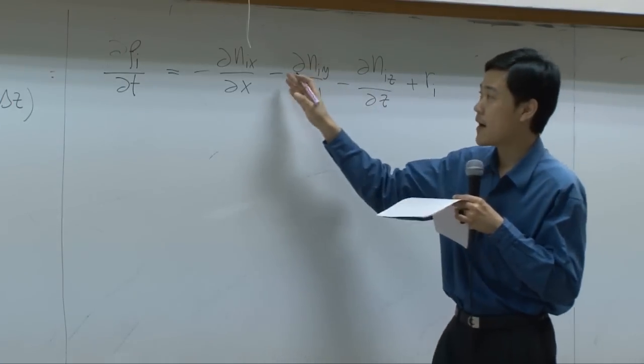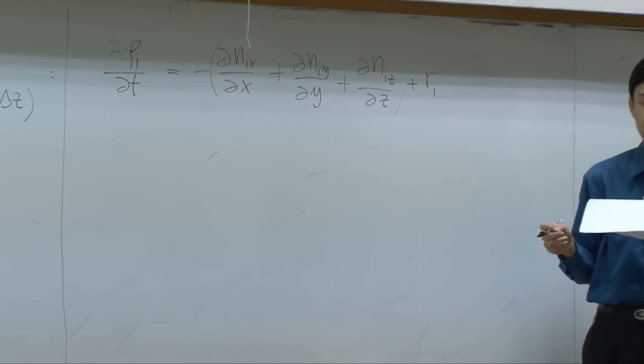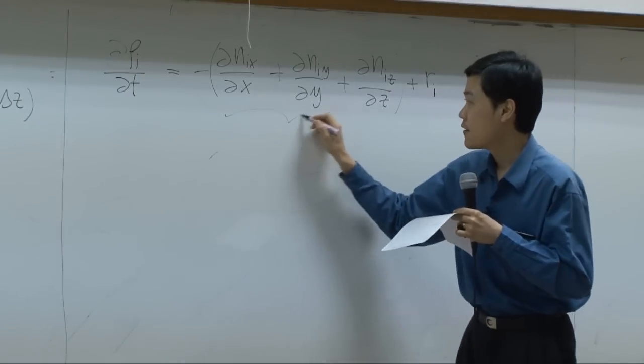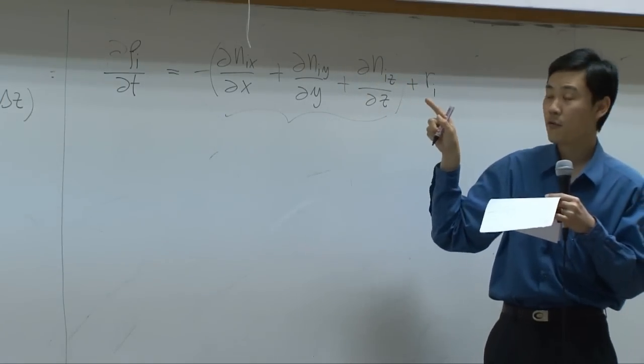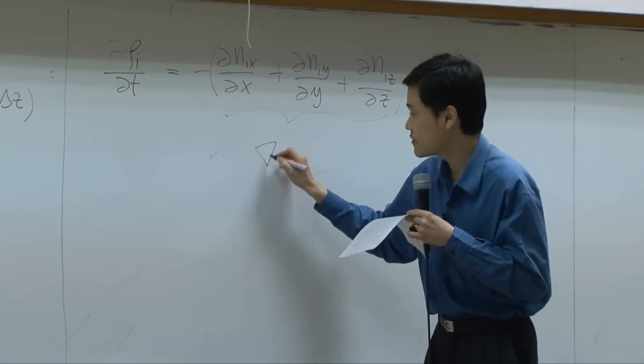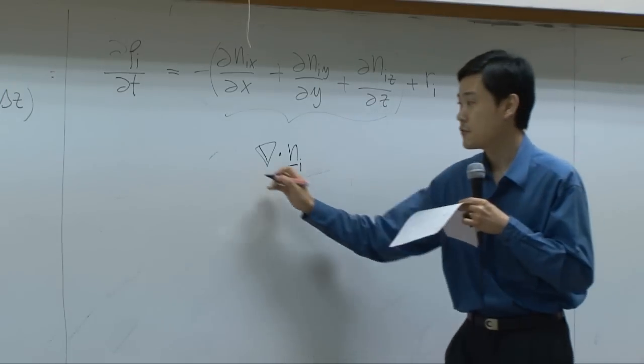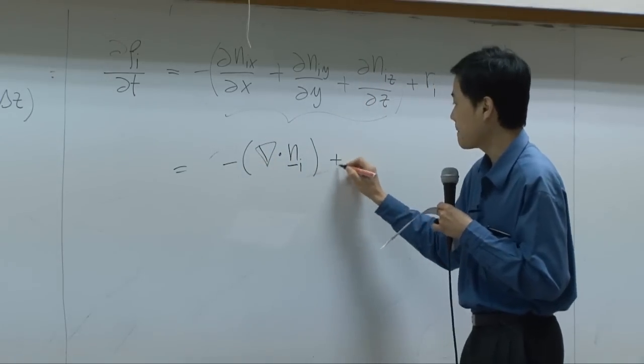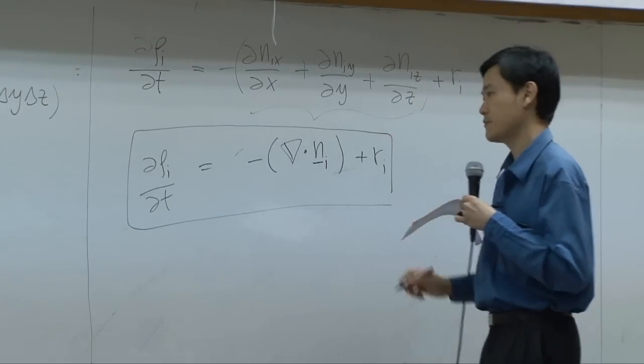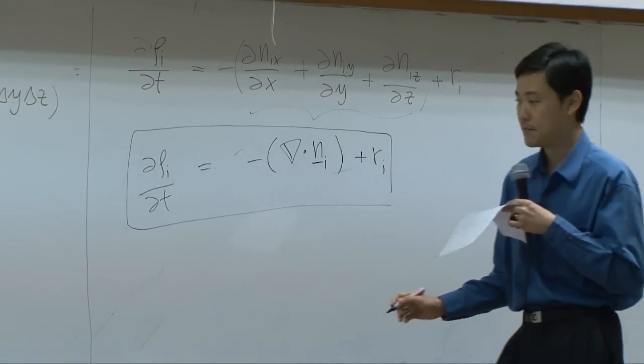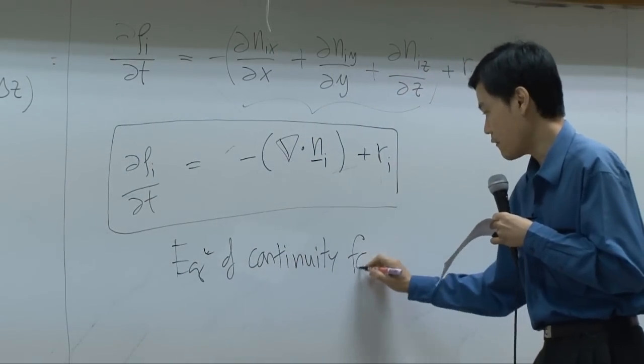From here I can take the minus sign out, everything here will be plus sign. Then within this parenthesis, it is flux in different direction differentiated with respect to that direction. It can be written as del dot n_i as a vector. So finally you have minus del dot n_i plus r_i equal to d(rho_i)/dt. This is the first equation that you get. It has a name: this is the equation of continuity for species i.